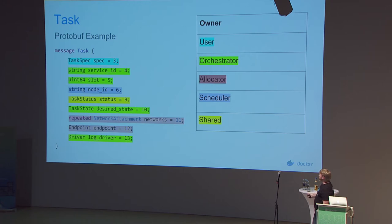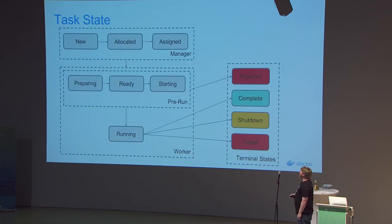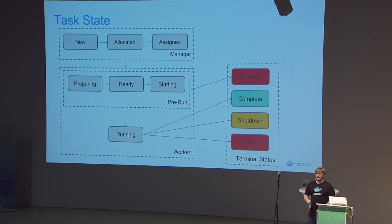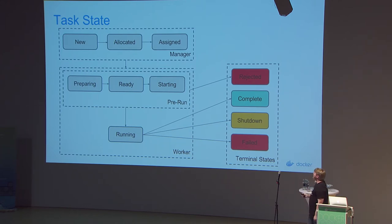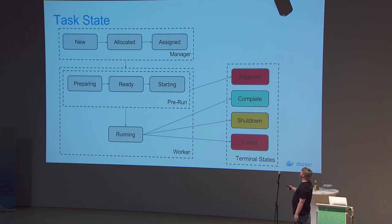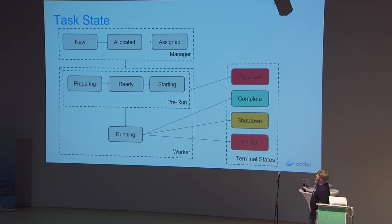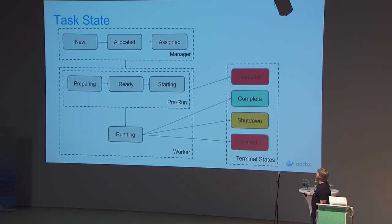The more interesting field ownership is the shared one: task status. As a task proceeds through the system, we do a handoff of field ownership for task status. When you first create a task, it's on the manager and progresses through states: new, allocated, then assigned. Once it's assigned, we change the field ownership of task status — it's now owned by the worker. You're handing off the system of record to the worker.